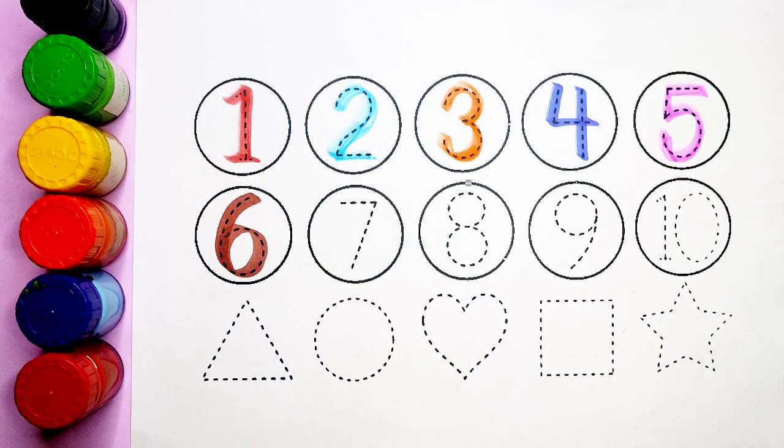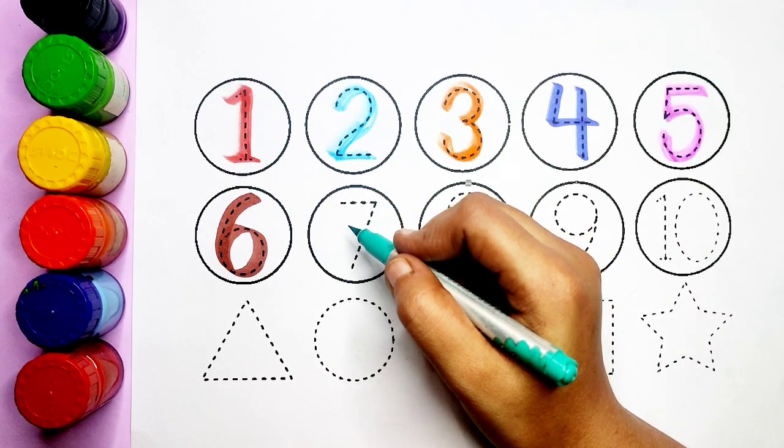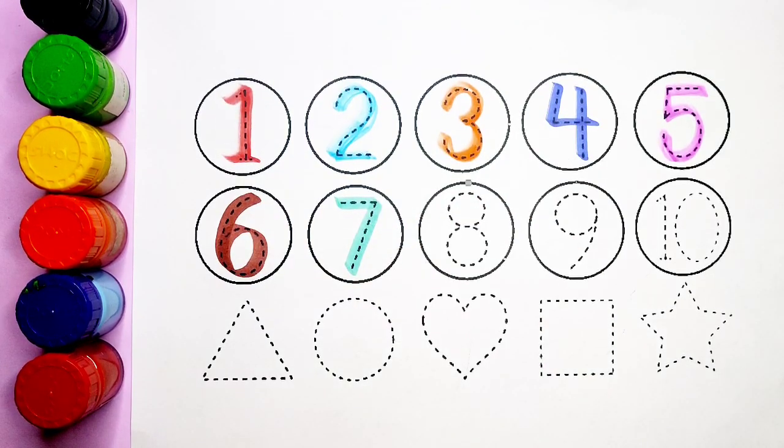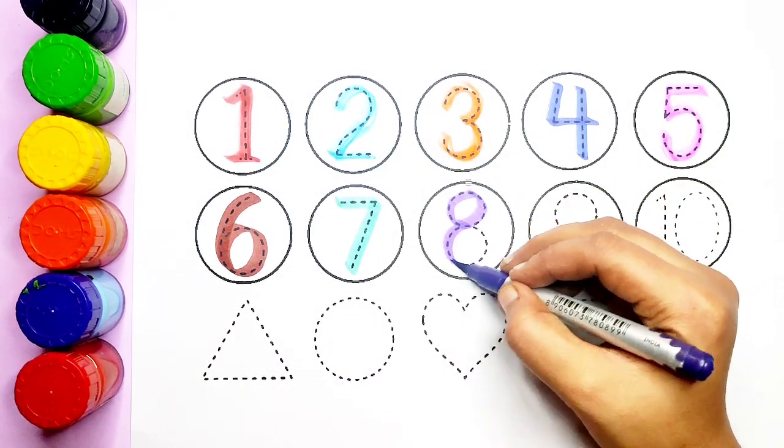After six comes seven. What comes children? Seven. Sea green color, number seven. After seven comes eight. What comes kids? Eight. Purple color, number eight.